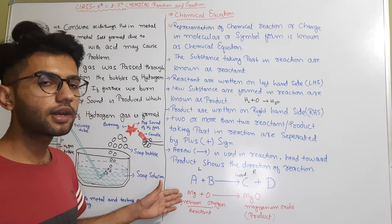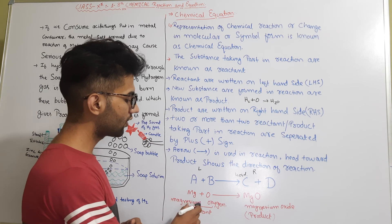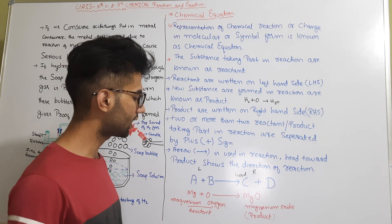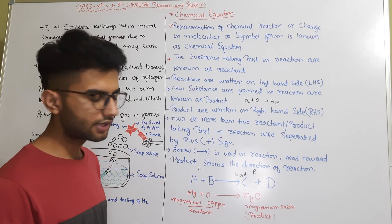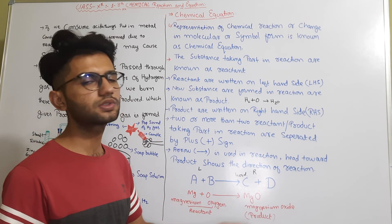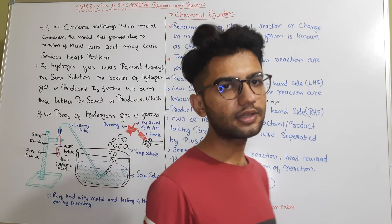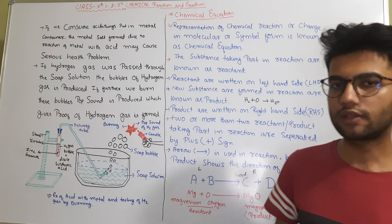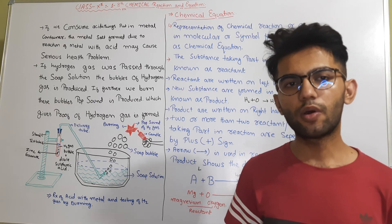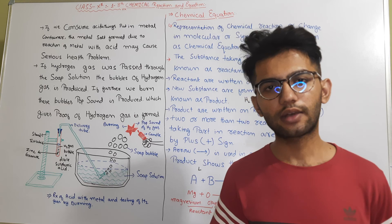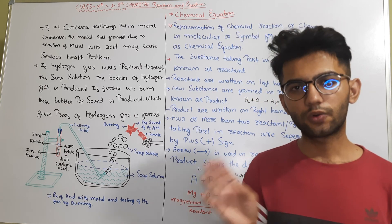For example: when magnesium reacts with oxygen, it forms magnesium oxide. Magnesium and oxygen are the initial substances and are known as reactants; magnesium oxide formed is known as the product. These are some properties of writing the chemical equation. We will learn more about it in detail in our next classes. For now, goodbye.